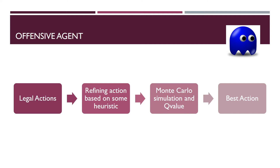From the refined action pool, we will run a Monte Carlo simulation on each action and return the Q-value as an evaluation. At the end, we will pick that action which gives the highest Q-value, running for 30 iterations.